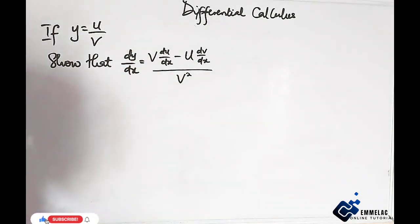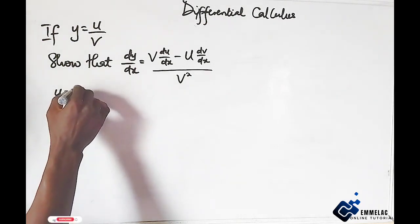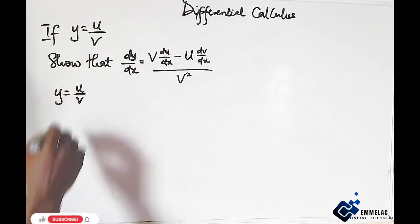This is what we call the quotient rule in differentiation. So how do we prove this? We're going to use the first principle to do that. We're given that y equals u all over v.